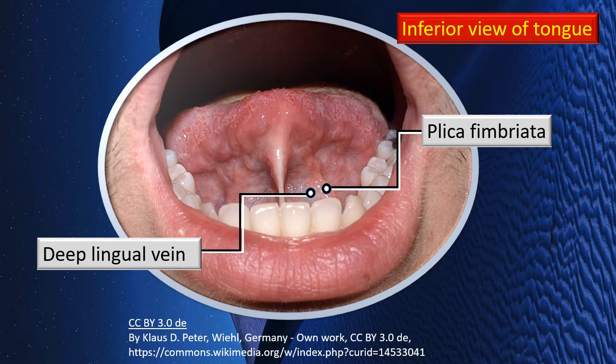Lateral to the frenulum linguae are two important structures: the deep lingual vein, seen as a blue hazy vertical area, and lateral to it a slightly ragged fold of mucosa — the plica fimbriata.